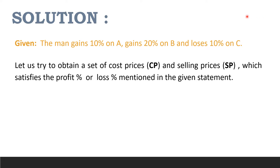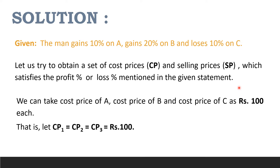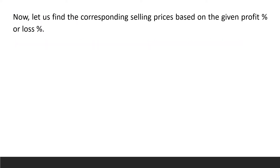It is given that the man gains 10% on A, gains 20% on B and loses 10% on C. Let us try to obtain a set of cost prices and selling prices which satisfies the profit or loss percentage mentioned in the given statement. We can take the cost price of A, cost price of B and cost price of C as Rs 100 each. That is, CP1 equals CP2 equals CP3 equals Rs 100.